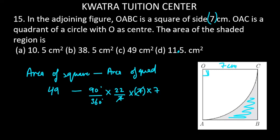r squared is 7 squared. So 7 and 7 will cancel. 90 and 360 cancel to give 1 over 4. This gives 11 times 2.